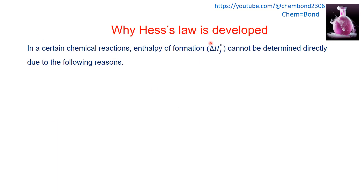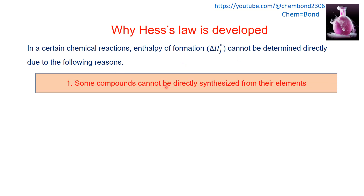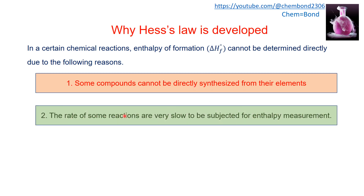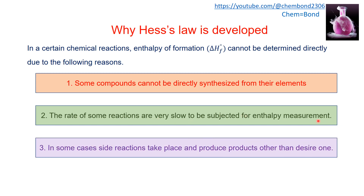Why was this law developed? In certain chemical reactions, enthalpy of formation cannot be determined directly due to the following reasons: some compounds cannot be directly synthesized from their elements; the rate of some reactions is very slow to be subjected for enthalpy measurement; and in some cases, side reactions take place and produce products other than the desired one. Because of these reasons, we use Hess's Law of constant heat summation for the indirect measurement of heat or enthalpy.